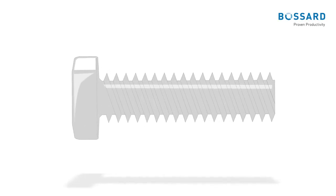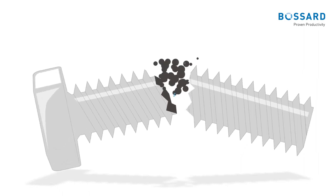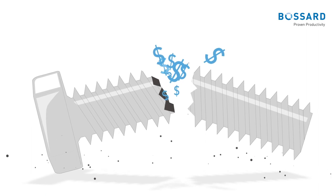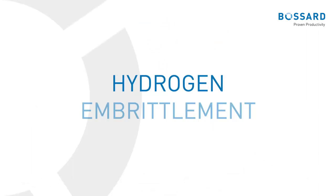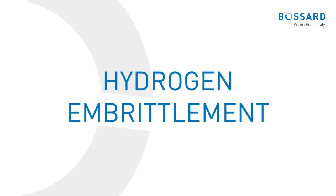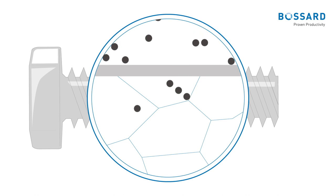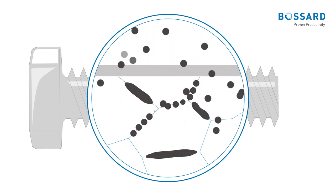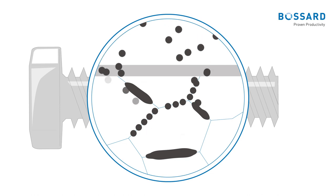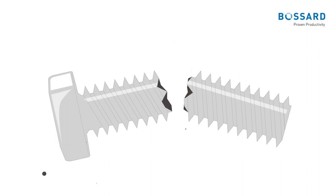Have you ever experienced a broken screw in one of your products? Unexpected failures of fasteners cause damages and high costs. One of the reasons could be hydrogen embrittlement — also known as hydrogen attack — a process whereby metal becomes brittle or fractures due to the exposure and diffusion of hydrogen through the metal. Hydrogen embrittlement is a serious matter that mechanically degrades a range of different structural materials.